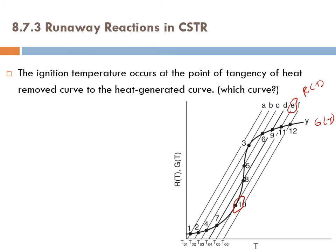Any slight increase in feed temperature above T05 will cause you to lose the lower steady state, leaving only the upper steady states — whether at Ts11 or higher. This results in a big jump in the reactor temperature, jumping from Ts10 to Ts11, which represents a huge increase in temperature. This sudden jump is where the reactor ignites.